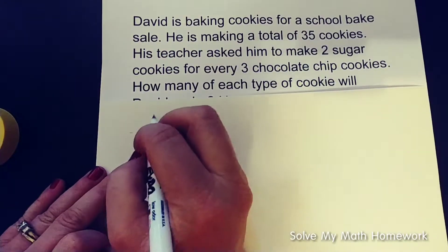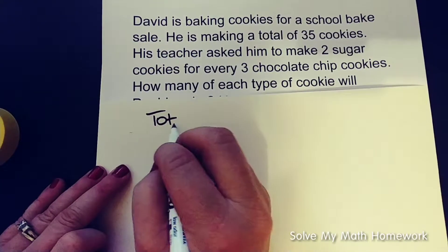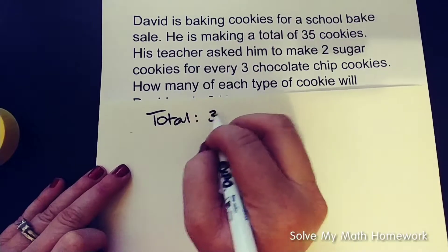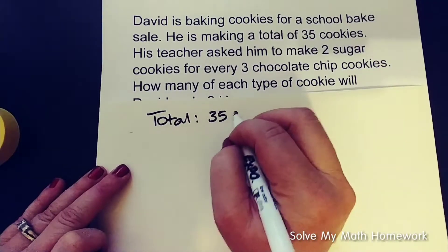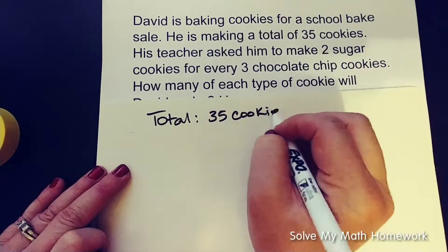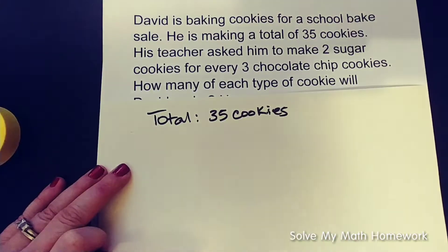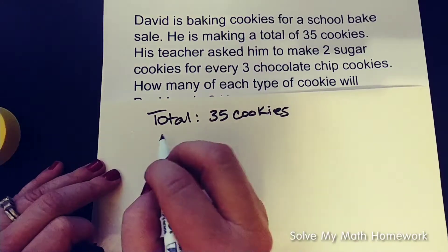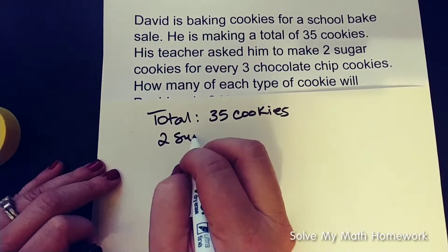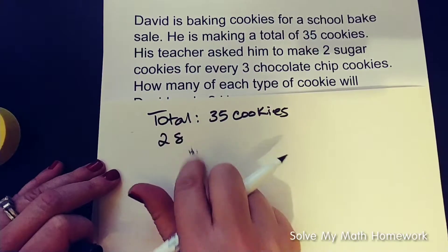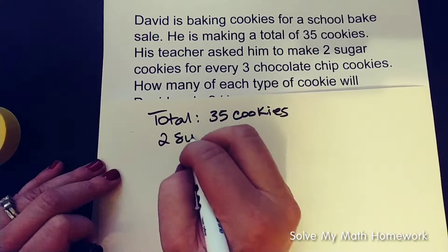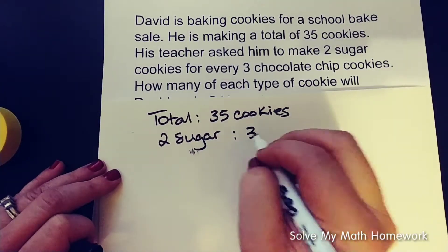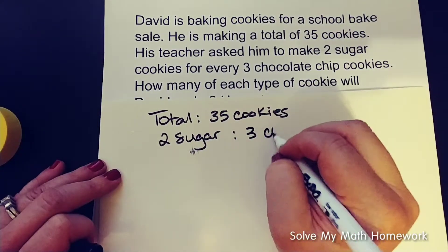We've got a total — he's making 35 cookies. And the teacher asked him to make two sugar cookies for every three chocolate chip.